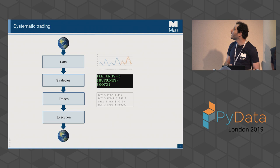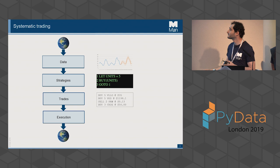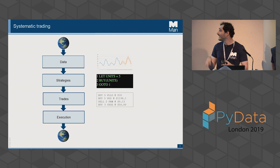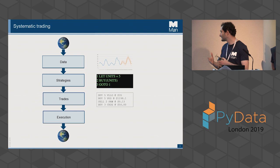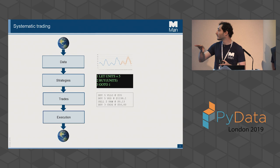At a very high level, everything starts with data. We ingest data from the outside and do two main things with it. We have a team of researchers who look at that data and produce trading strategies. Those trading strategies also run in production, fed by the data we ingest, and they spit out trades. The strategy's only task is to look at the data being fed into it and output these trades.